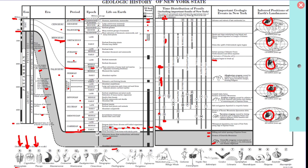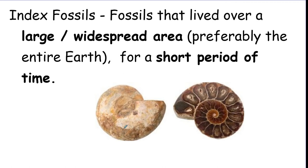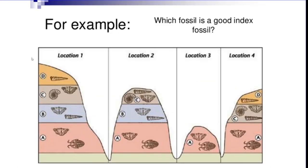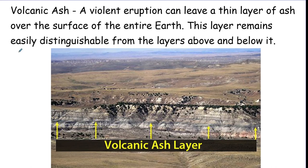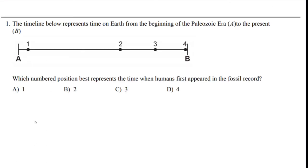For index fossils to be good, they must have existed over a large area but only for a short period of time. Looking at a picture with four locations, the best index fossil is one found in each location but only in one layer. Another good time marker is volcanic ash — it covered a large area and formed in a very short amount of time.